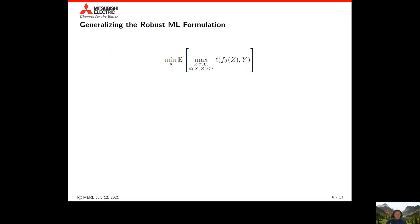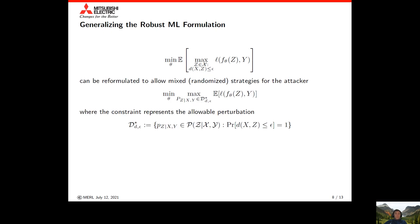Starting from the robust machine learning formulation in this minimax form, we generalize it slightly to strengthen the adversary. We do this by allowing the adversary to play randomized or mixed strategies. Herein, the adversary can be represented by a channel that takes as input the clean data x and y and outputs the perturbation z. Similarly, we keep a distortion constraint where z has to be within epsilon distance of x with probability 1.